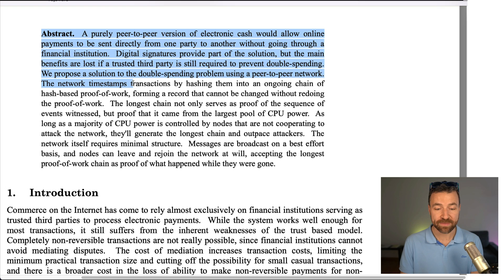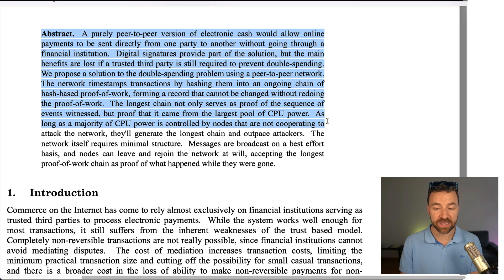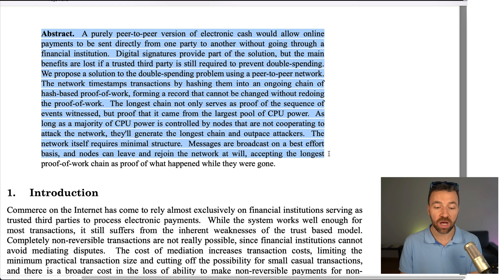The network timestamps transactions by hashing them into an ongoing chain of hash-based proof-of-work, forming a record that cannot be changed without redoing the proof-of-work. The longest chain not only serves as proof of the sequence of events witnessed, but proof that it came from the largest pool of CPU power. As long as a majority of CPU power is controlled by nodes that are not cooperating to attack the network, they'll generate the longest chain and outpace attackers. The network itself requires minimal structure. Messages are broadcast on a best-effort basis and nodes can leave and rejoin the network at will, accepting the longest proof-of-work chain as proof of what happened while they were gone.